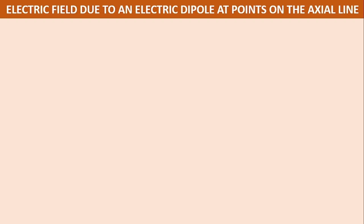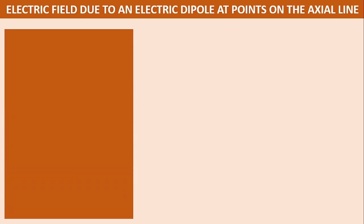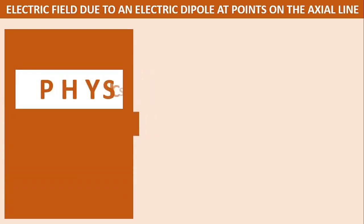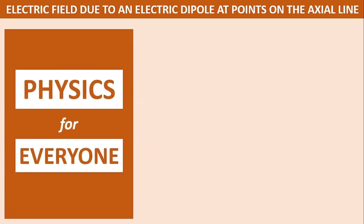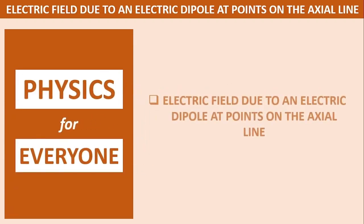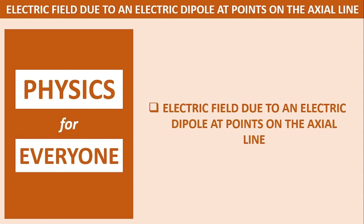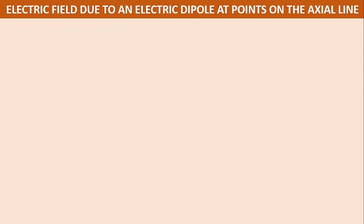Electric field due to an electric dipole at points on the axial line. Physics for everyone welcomes you. Today's topic: electric field due to an electric dipole at points on the axial line. Let us learn a few formulae to understand this topic.